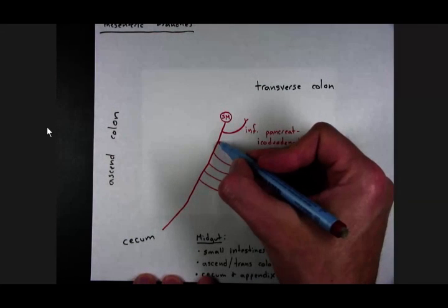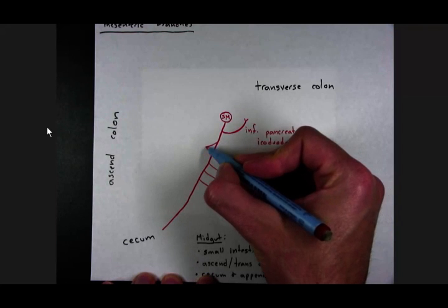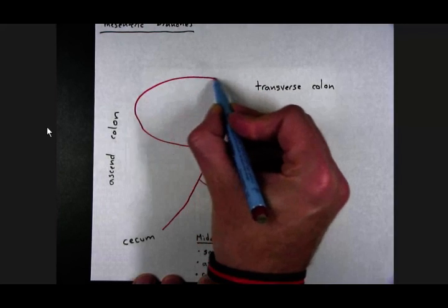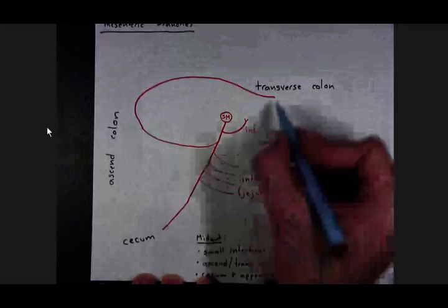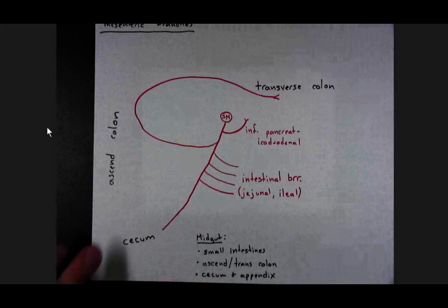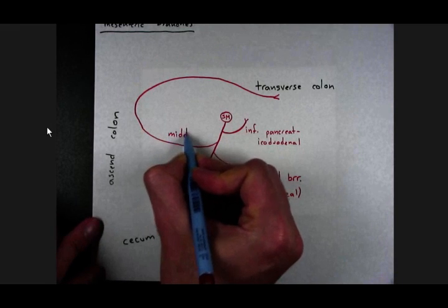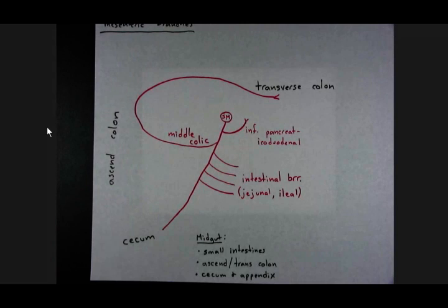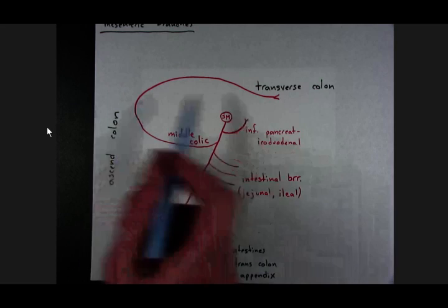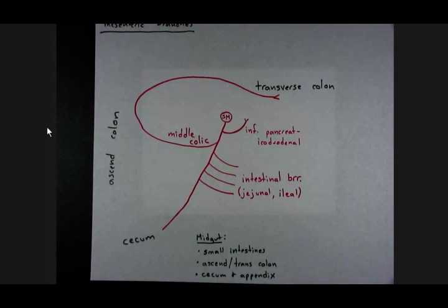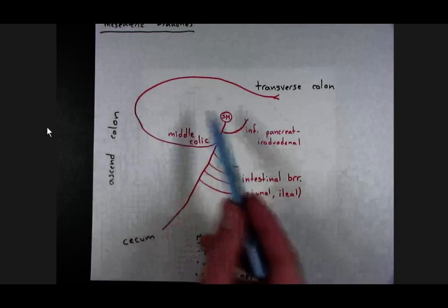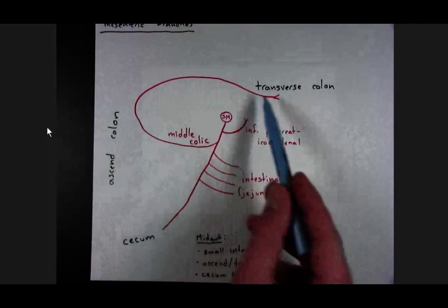We will find branches that are swinging out toward the colon. So the middle colic artery. That will take care of the transverse colon. So I mean that's probably doing some ascending colon and some right hepatic flexure. But primarily we think of middle colic as coming up and hitting the transverse colon.